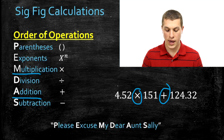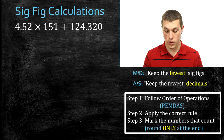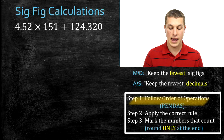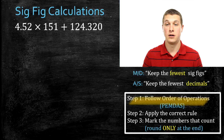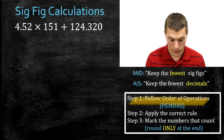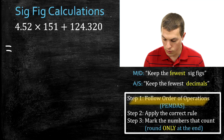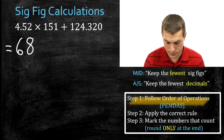Alright, let's go ahead and do this first problem. Step one says follow order of operations. What we want to do is multiply 4.52 times 151 because multiplication comes first. When we do that in our calculator, that gives us 682.52. Then we're going to go ahead and rewrite that 124.320.